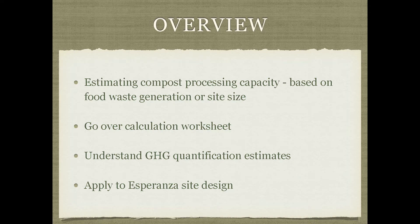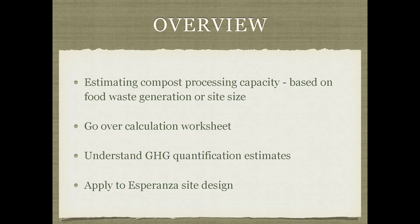We are going to estimate our compost processing capacity based on area size, because generally our sites are small and limited in size. It's not set in stone — you can always get creative and create more space to process more materials. Then we'll take those numbers and translate them into greenhouse gas benefits — CO2 equivalent — and then translate that into terms lay people can understand, such as cars removed from the road, miles driven saved, or gasoline quantity saved.